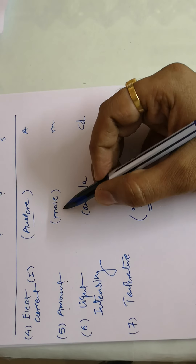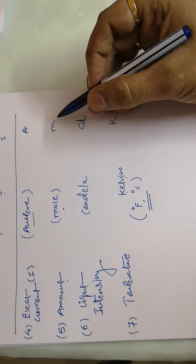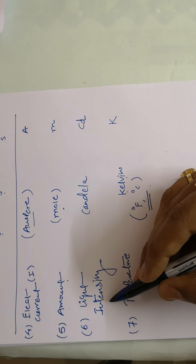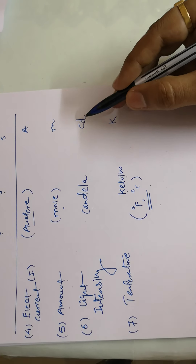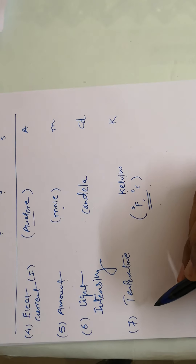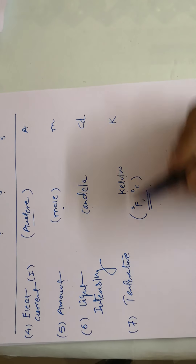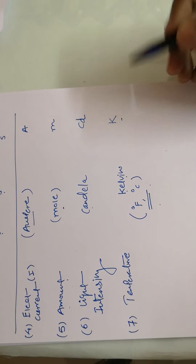Electric current is denoted by 'I'. Amount of substance is the mole, represented by the small letter 'm'. Light intensity is candela, represented by 'cd'.